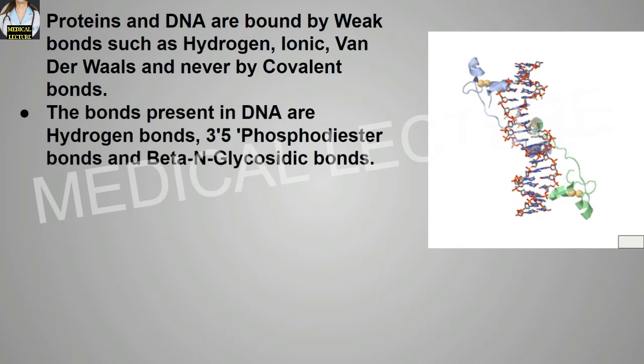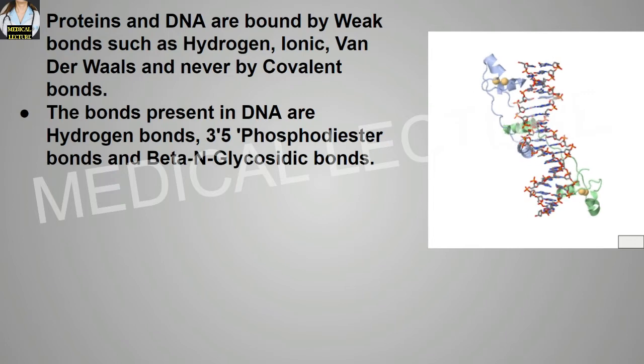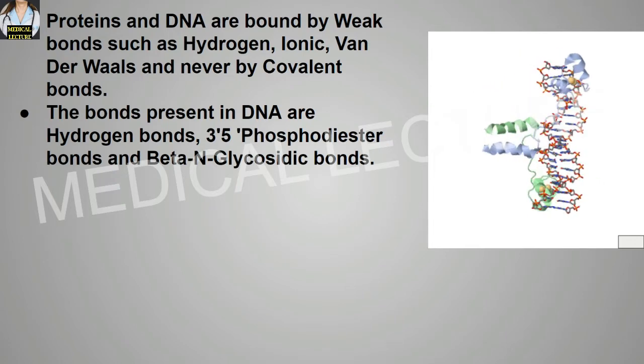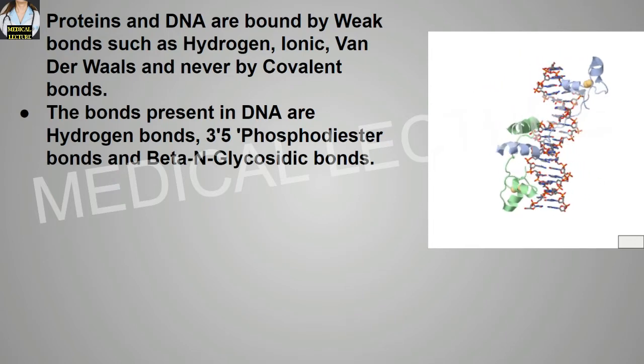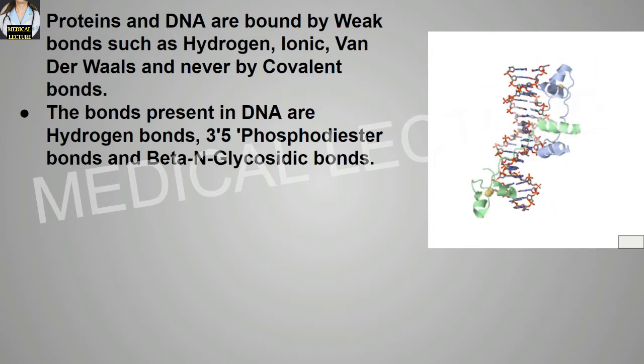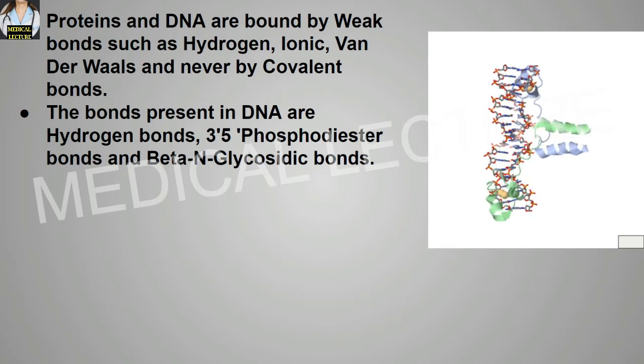The bonds present in the DNA are the hydrogen bonds, 3'-5' phosphodiester bonds, and the beta-N-glycosidic bonds.